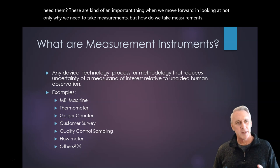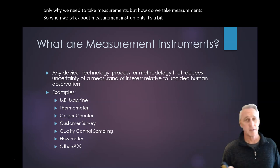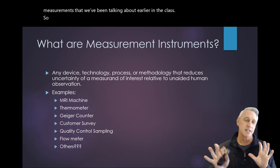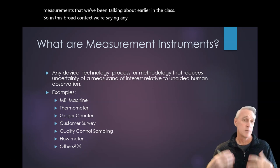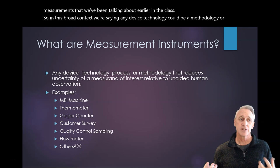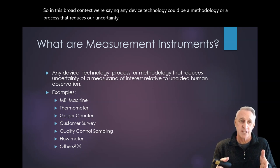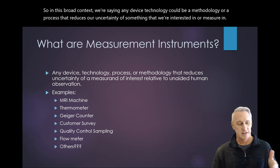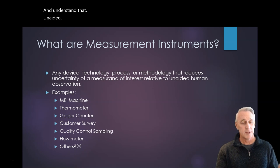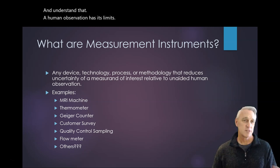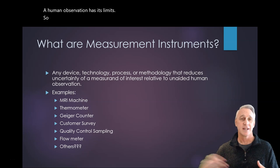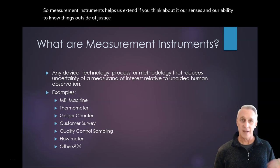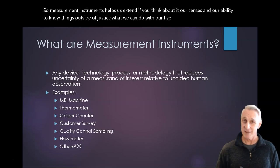So when we talk about measurement instruments, it's a bit broader than the physical types of measurements we've been talking about earlier in the class. In this broad context, we're saying any device, technology, methodology or process that reduces our uncertainty of something that we're interested in or measuring, and understand that unaided human observation has its limits.